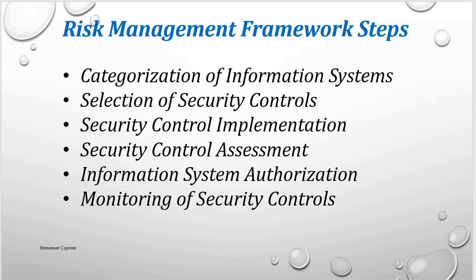How do you categorize? You categorize by identifying the information types — that is, the information that is processed, stored, transmitted, and shared in an information system. The next thing you do is assign potential impact for each of the security objectives, that is the CIA — confidentiality, integrity, and availability — for each information type, in order to arrive at your high watermark. From the high watermark, you determine the overall security impact of the system.